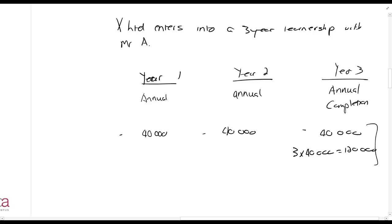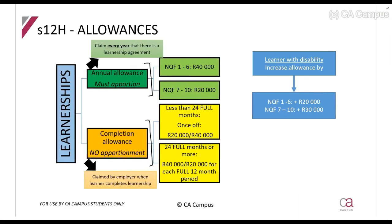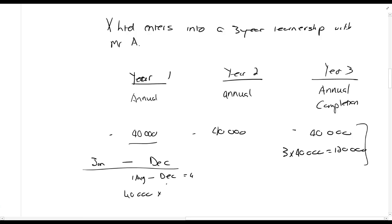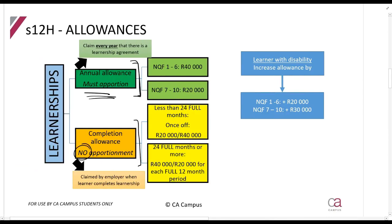If you have five people, that's a million rands in additional tax deductions — and you can still deduct the salaries and everything as well. So this is a great initiative for employers. Now regarding the annual allowance, it must be apportioned. Say your tax year runs from 1 January to 31 December, and you enter into the agreement on 1 August — that's four months remaining. You'd calculate R40,000 × 4/12. The annual allowance must be apportioned; there is no apportionment for the completion allowance.